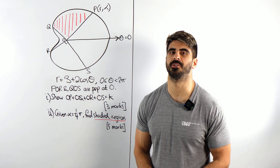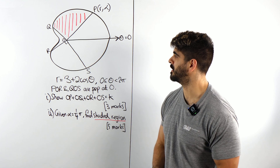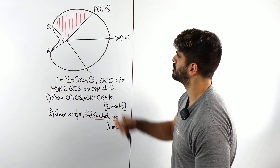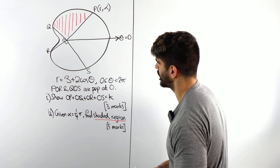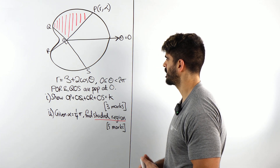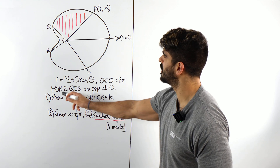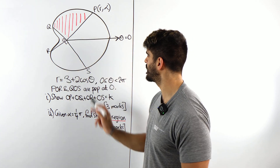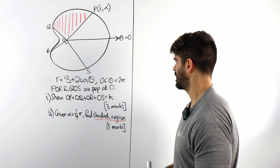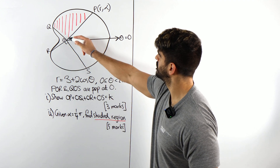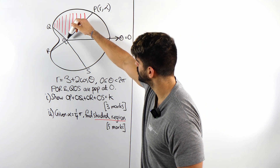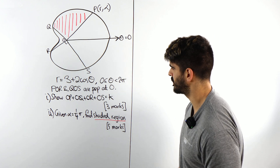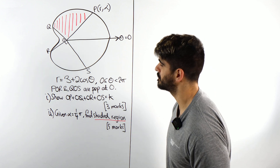Christmas time, polar coordinates, North Poland. If you want to be Santa Claus, you need to know how to do this question. We have this beautiful diagram that I personally drew myself. R is 3 plus 2 cos theta, theta is between 0 and 2 pi. POR and QOS are perpendicular at O. Show that the lengths OP, OQ, OR and OS add to some value K, and find that value of K.